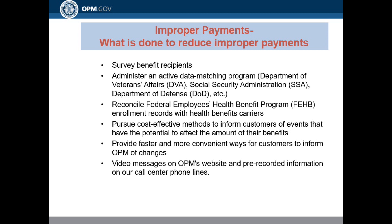What is done to reduce improper payments? We use surveys sent out to recipients to determine if improper payments are being caused. We administer an active data matching program through the Department of Veterans Affairs, Social Security Administration, and Department of Defense. We reconcile federal employees health benefits program enrollment records with health benefit carriers. We pursue cost-effective methods to inform customers of events that have the potential to affect the amount of their benefits, and provide faster and more convenient ways for customers to inform OPM of changes. We also use video messages on OPM's website and pre-recorded information on our call center phone lines.